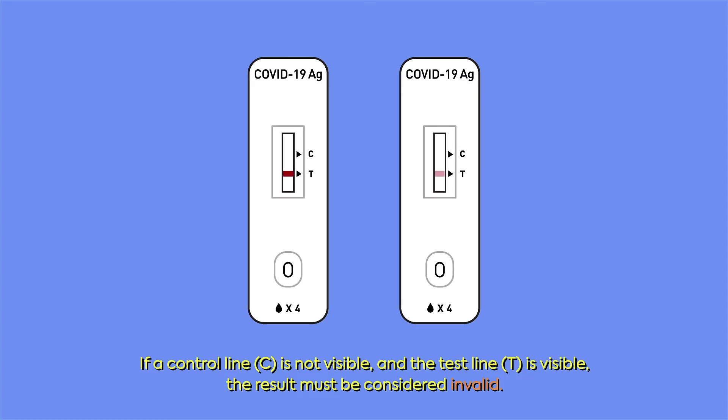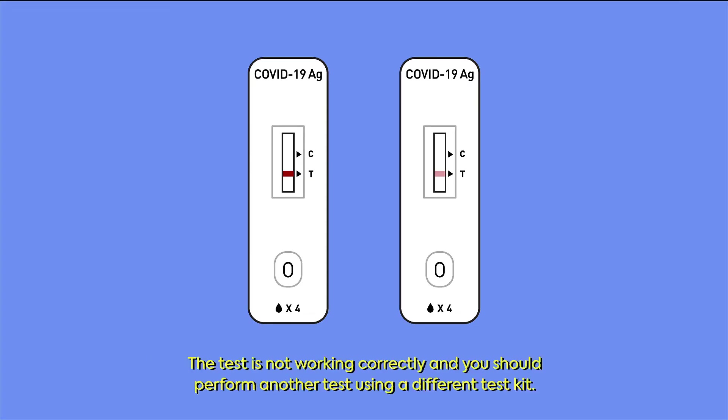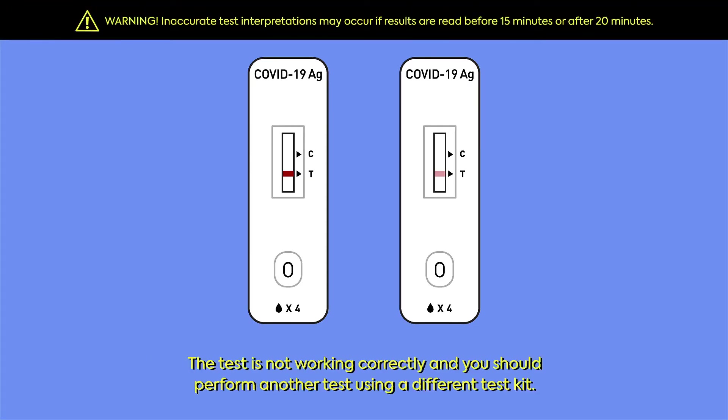If a control line C is not visible and the test line T is visible, the result must be considered invalid. The test is not working correctly, and you should perform another test using a different test kit.